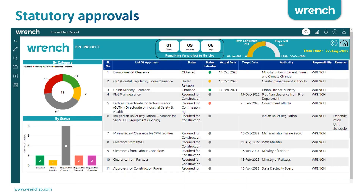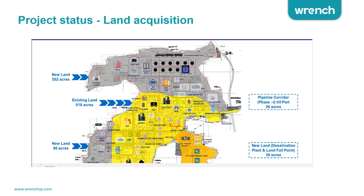There are other reports you can generate, such as statutory approvals coming from the drawing list, categorized by which drawings are required for construction, commissioning, and operations. You can also see the status of land acquisition on a map so you clearly know what has been acquired, what is still pending, and the challenges you face — all on a real-time basis.